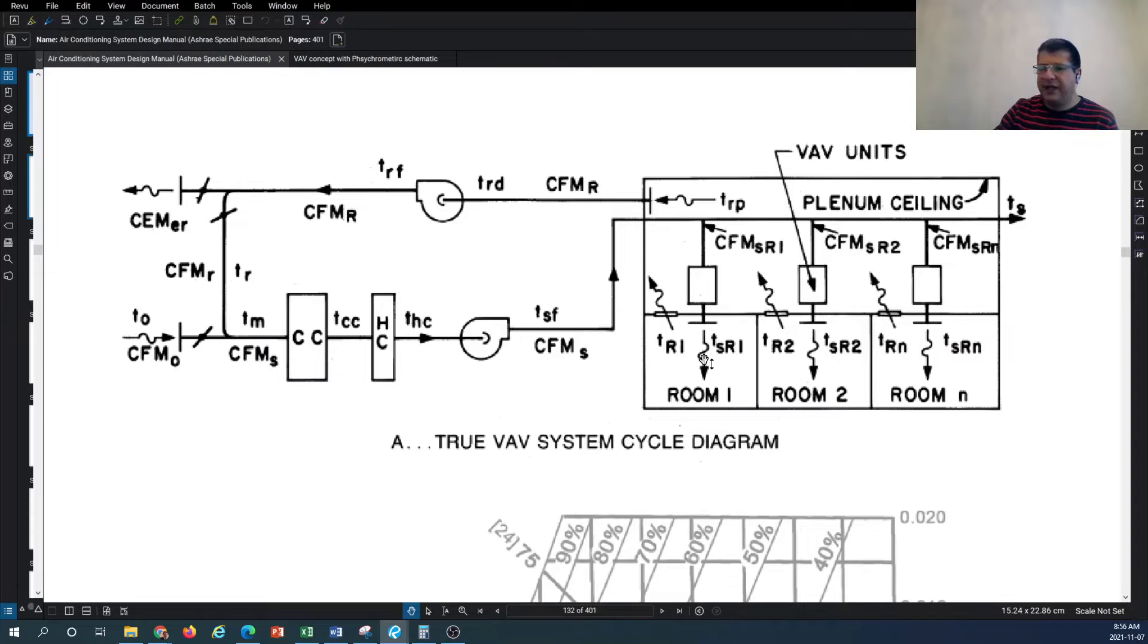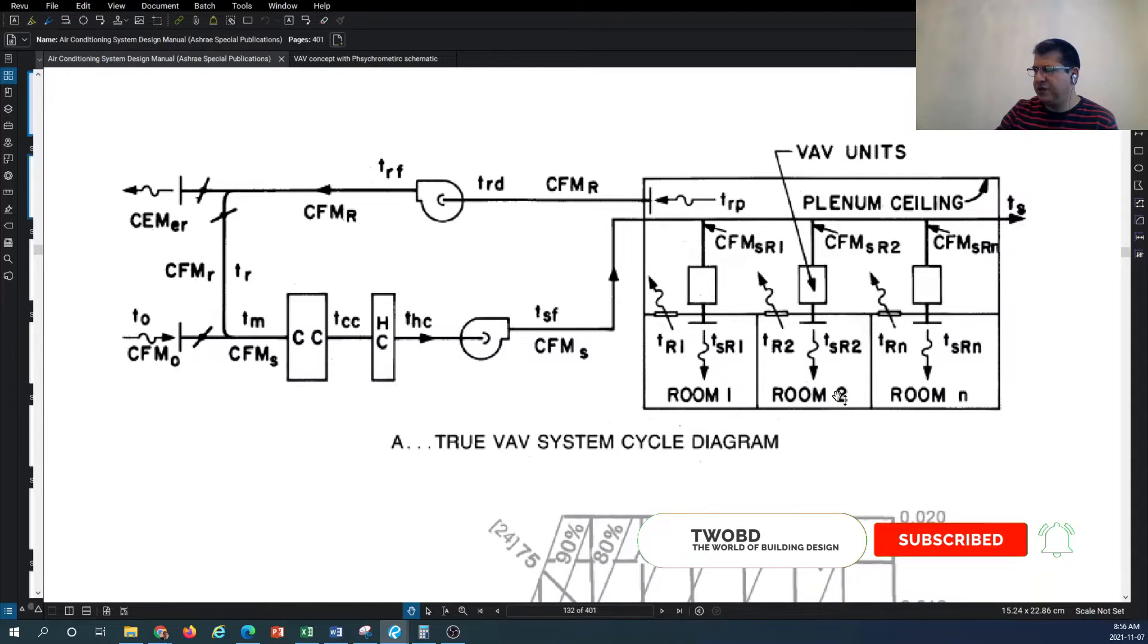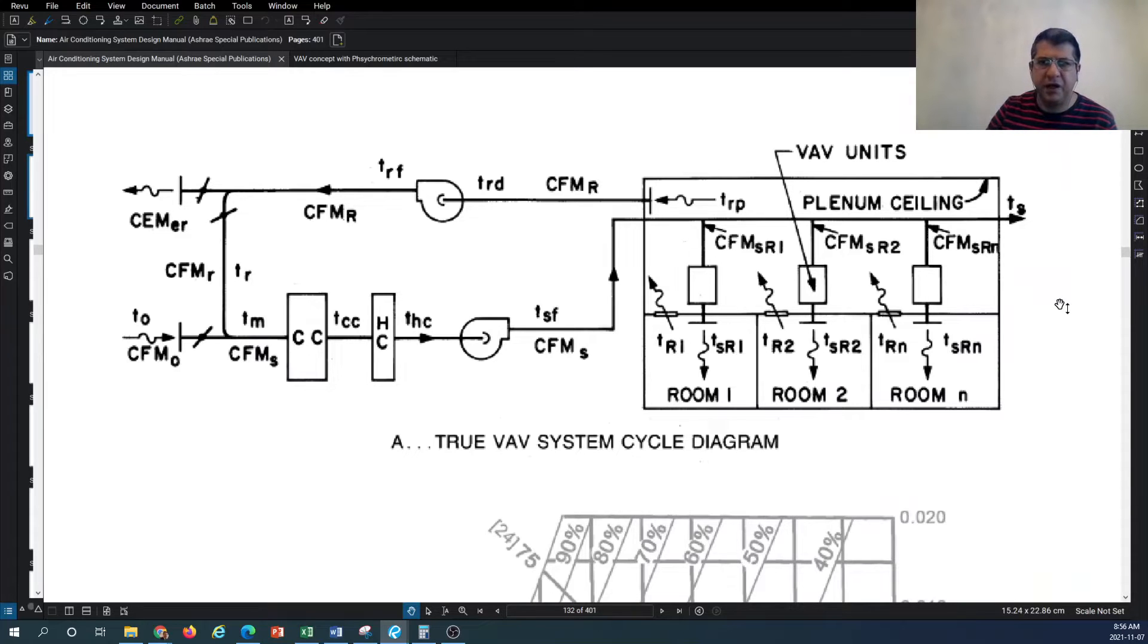The air at variable volume gets into the room and then comes back out to the return grill, goes to this entire air plenum, and then eventually gets into the return duct system. As you can see, we have three air terminal units dedicated to three different rooms, and this can continue on and on depending on how many rooms you have and how many VAV terminal units you would like to dedicate to that room.